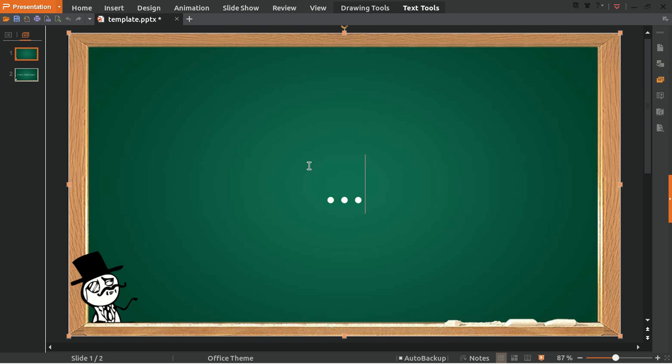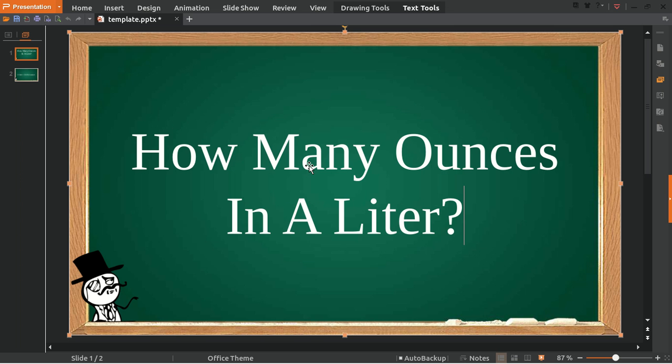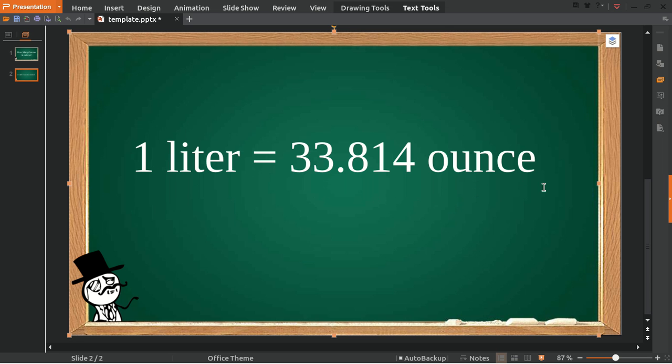Hello everyone, welcome to this video tutorial. Today we're going to answer a question about how many ounces are in a liter. To answer this question, I've provided the answer: one liter is equal to 33.814 ounces.